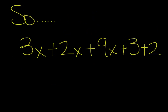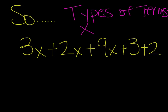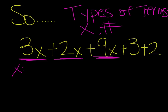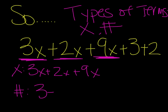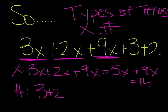So if we take a look at this example, we have 3x plus 2x plus 9x plus 3 plus 2. I have x terms and also number terms — a non-variable term, which would be the 3 and the 2. For my x terms, I have 3x, 2x, and 9x. For the number terms, I have 3 plus 2. So 3x plus 2x is 5x, plus 9x is 14x. And 3 plus 2 is 5. So after simplifying, I have 14x plus 5.